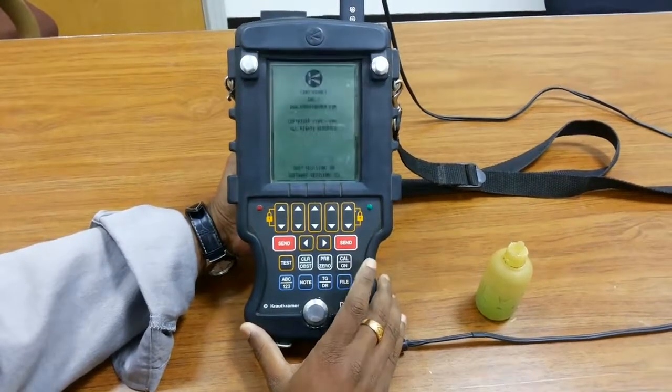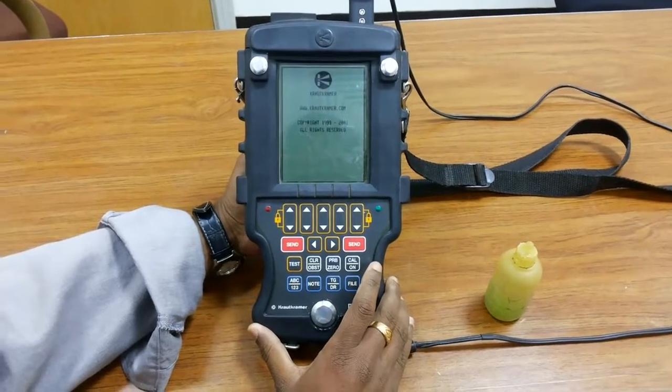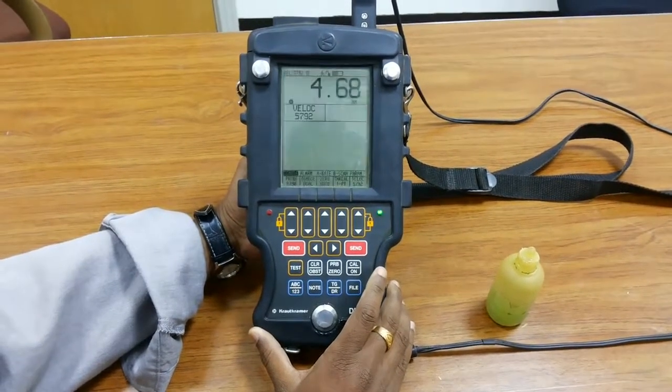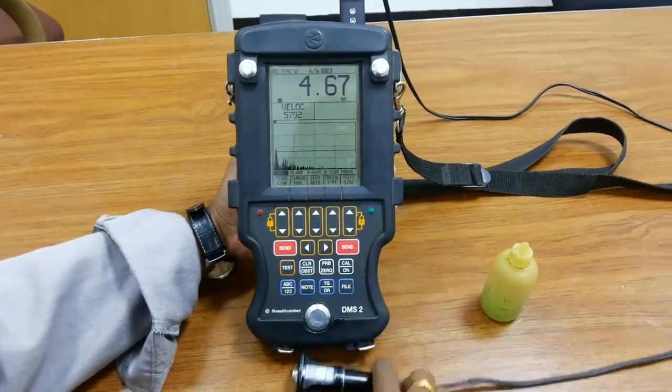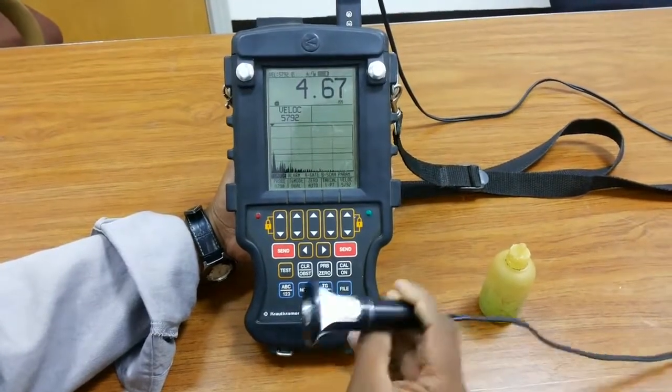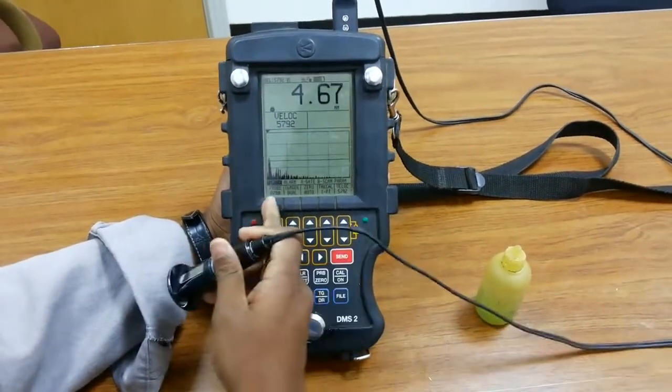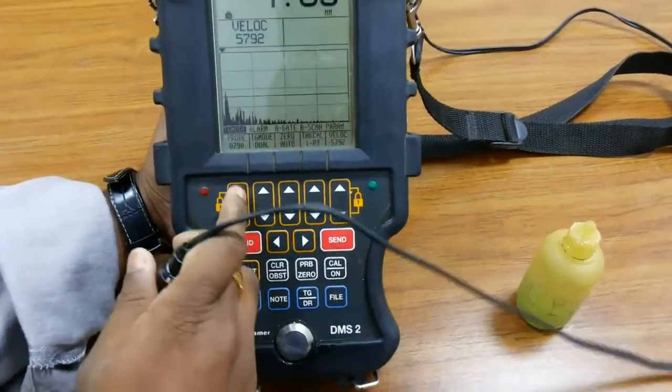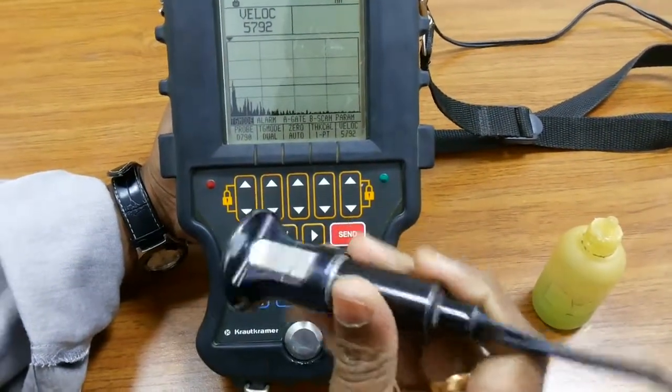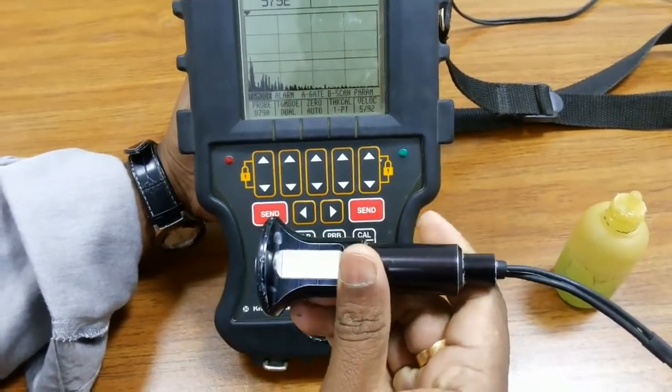First, turn on the machine. Then select the probe which you are using on this machine. Enter the probe number - you can see here we are using probe D790.